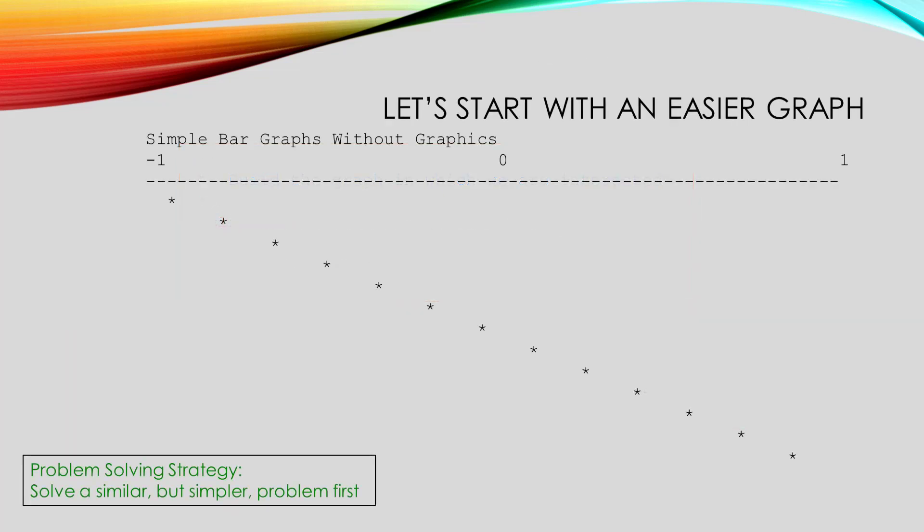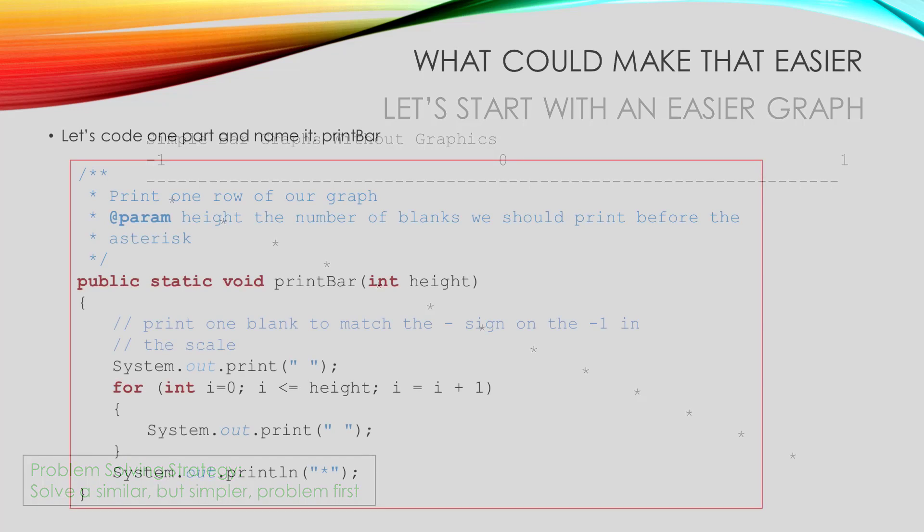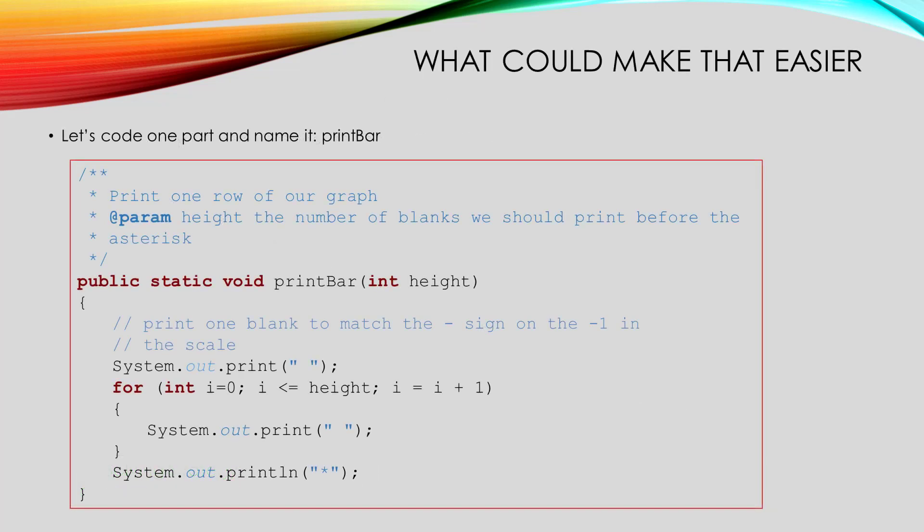In theory, the next thing we should do is output the curvy part of the graph. But that seems pretty complicated. Our second problem solving strategy is to solve a similar but simpler problem first. So, let's try to just output a line. To do this, we just have to make each line print out five more spaces before the asterisk.